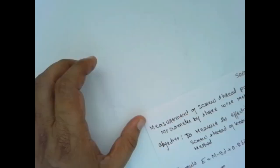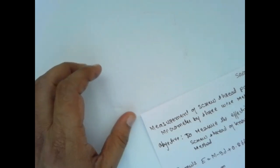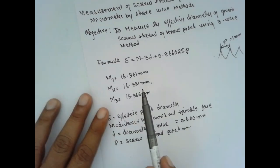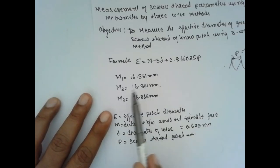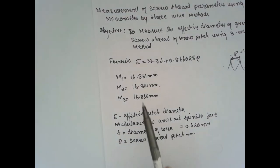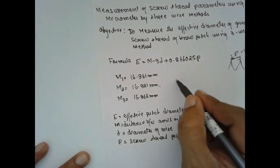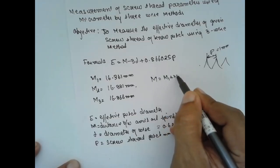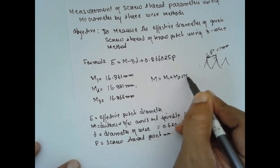I will keep the equipment aside. Now I will substitute these m1, m2, and m3 values and measure the mean value. M equals m1 plus m2 plus m3 divided by 3.